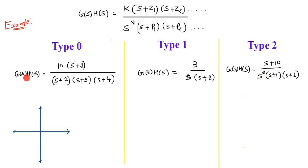For the first example, the loop transfer function G(S)H(S) equals (S+1) in the numerator and (S+2)(S+3)(S+4) in the denominator. Comparing with S^N, we see there is no S^N term, meaning S^0, so N equals 0. That means there are no poles at the origin, so this system is a type 0 system.